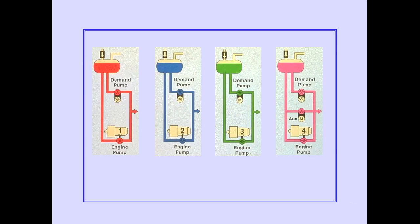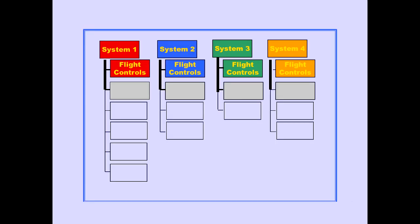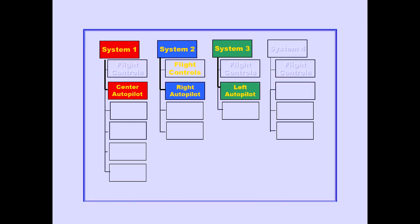There are four functionally independent hydraulic systems. Each system is pressurized by a combination of a demand hydraulic pump and an engine-driven hydraulic pump. System 4 also has an electric auxiliary pump. All four hydraulic systems power the flight controls. Three autopilots operate through systems 1, 2, and 3.